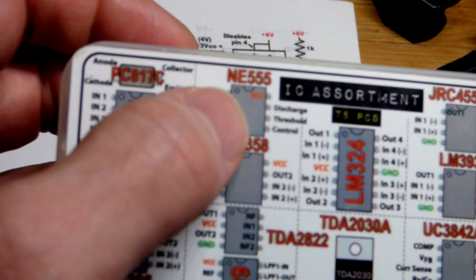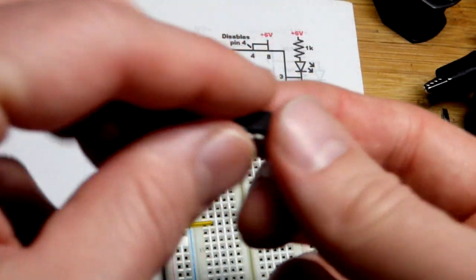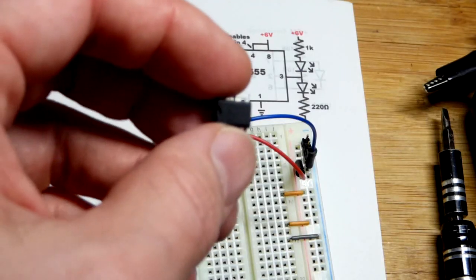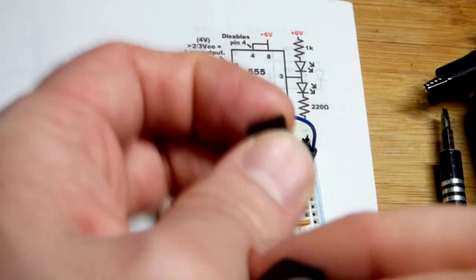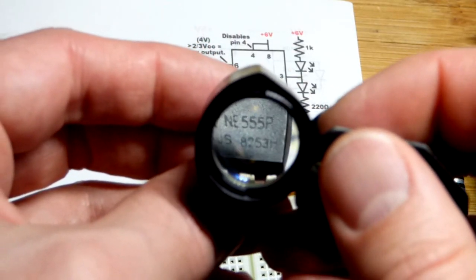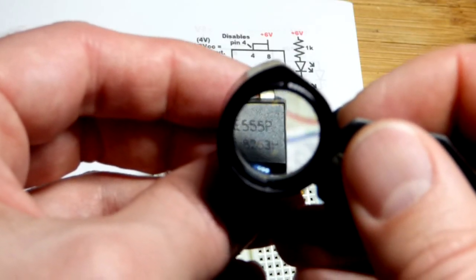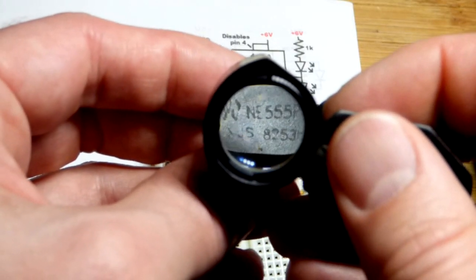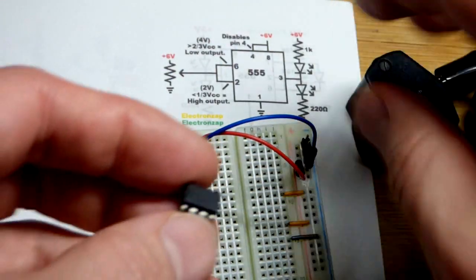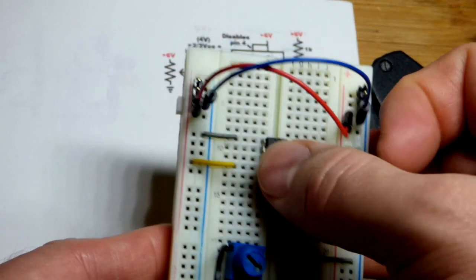So I got this 555 timer out of the kit here. I recommend if you want an integrated circuit, get one in a variety pack like that, so you got other integrated circuits to play with and learn about, unless you absolutely need a whole bunch of one particular component. So yeah, there you can see the part number pretty well right there.